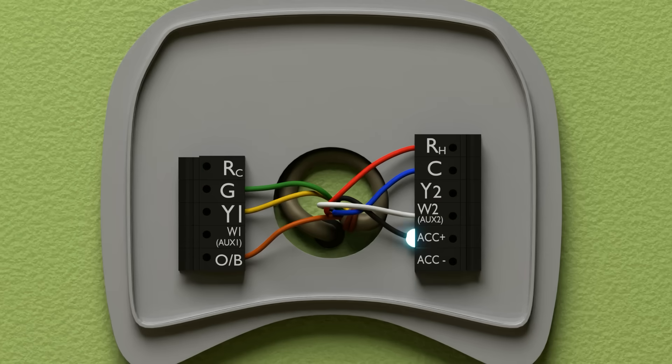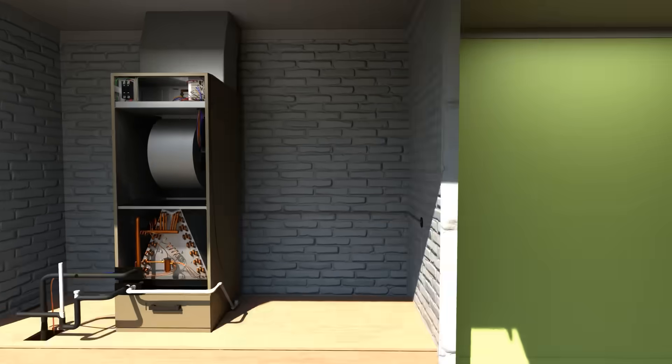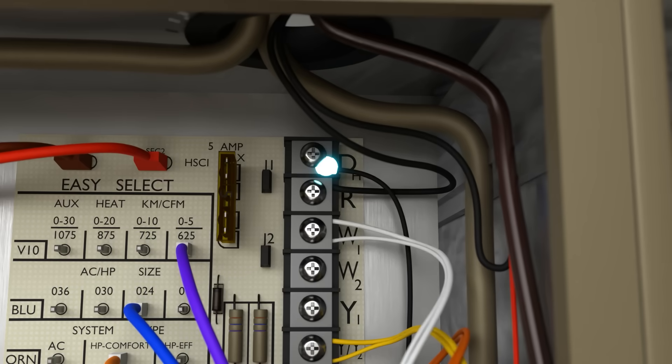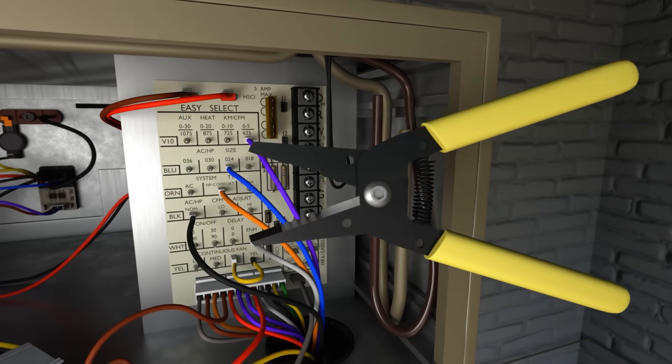In this case, we're using ACC plus to energize the dehumidification terminal on the terminal block. The blower will only come to full speed when the DH terminal is energized by the thermostat.